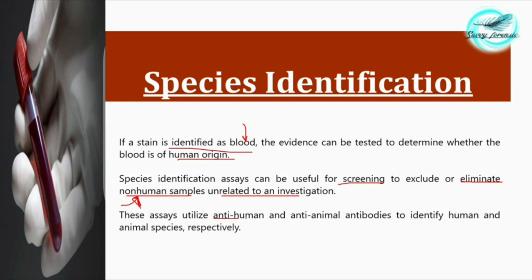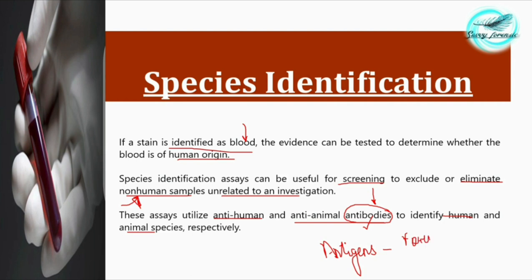These assays utilize anti-human and anti-animal antibodies to identify human and animal species respectively. First, let's understand what antigens are. Antigens are usually foreign substances which may be present on cell surfaces or in solution inside the cell, and they are capable of eliciting an immune response in the body as well as reacting with antibodies.